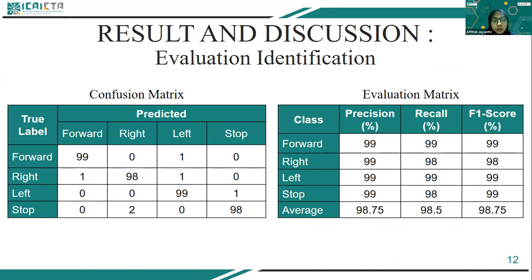The next step is to measure the model's performance with a confusion matrix, shown in the table for each class. Based on the evaluation matrix table, the lowest precision value is in the left class. Considering that class has more varied training data, the model can colon training data well. However, the precision generated from each class is good, which means the model has a good level of prediction accuracy. The F1 score gets high results, indicating that the values of precision and recall are also high. The average score produced similar accuracy as the computational model.